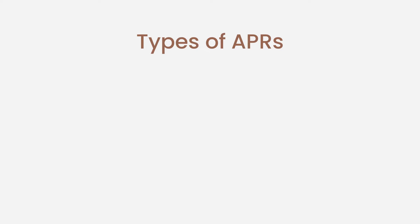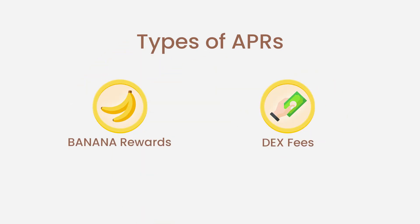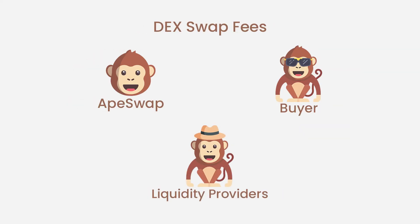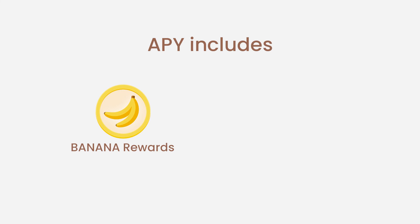In ApeSwap banana farms, there are two types of APRs: banana rewards and DEX swap fees. The first type are the bananas which ApeSwap uses as incentive to provide liquidity, and are calculated in real time. The second type are the fees a user earns for providing liquidity each time a transaction is executed, calculated based on the previous 24 hours of trading volume. APY includes annualized banana rewards and rewards for providing liquidity, compounded daily.